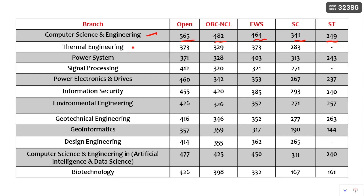The other branches listed include Thermal Engineering, Power Systems, Signal Processing, Power Electronics and Drives, Information Security, Environmental Engineering, Geotechnical Engineering, Geoinformatics, Design Engineering, CSE in Artificial Intelligence and Data Science, and Biotechnology. You can pause the video and go through the cutoffs for each branch as per your category to check your eligibility.